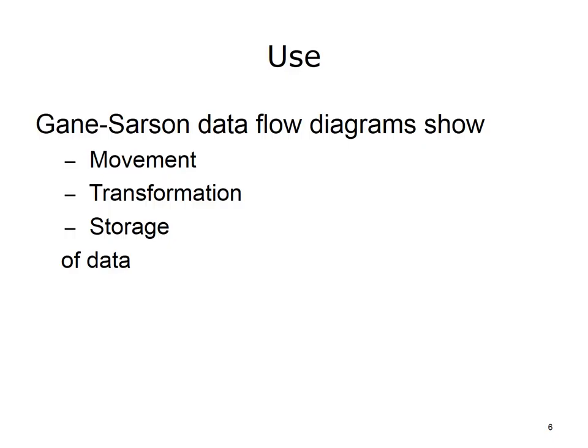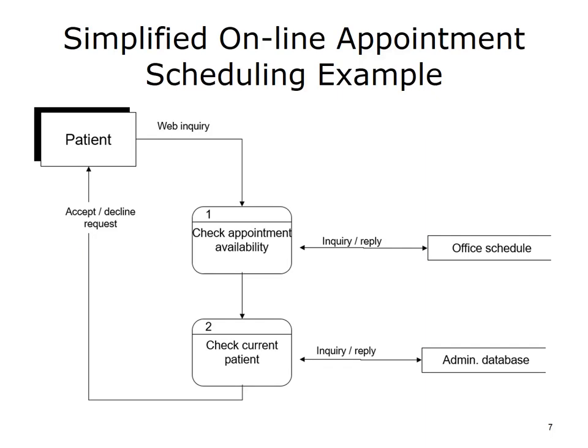Gane-Sarson notation is specific to data flow diagrams which show the movement, transformation, and storage of data. This is an example of a simplified online appointment scheduling Gane-Sarson diagram. The diagram describes a data flow where a patient enters a web inquiry, which generates two checks against different databases, after which the information — including an option to accept or decline the appointment — is returned to the patient for acceptance.